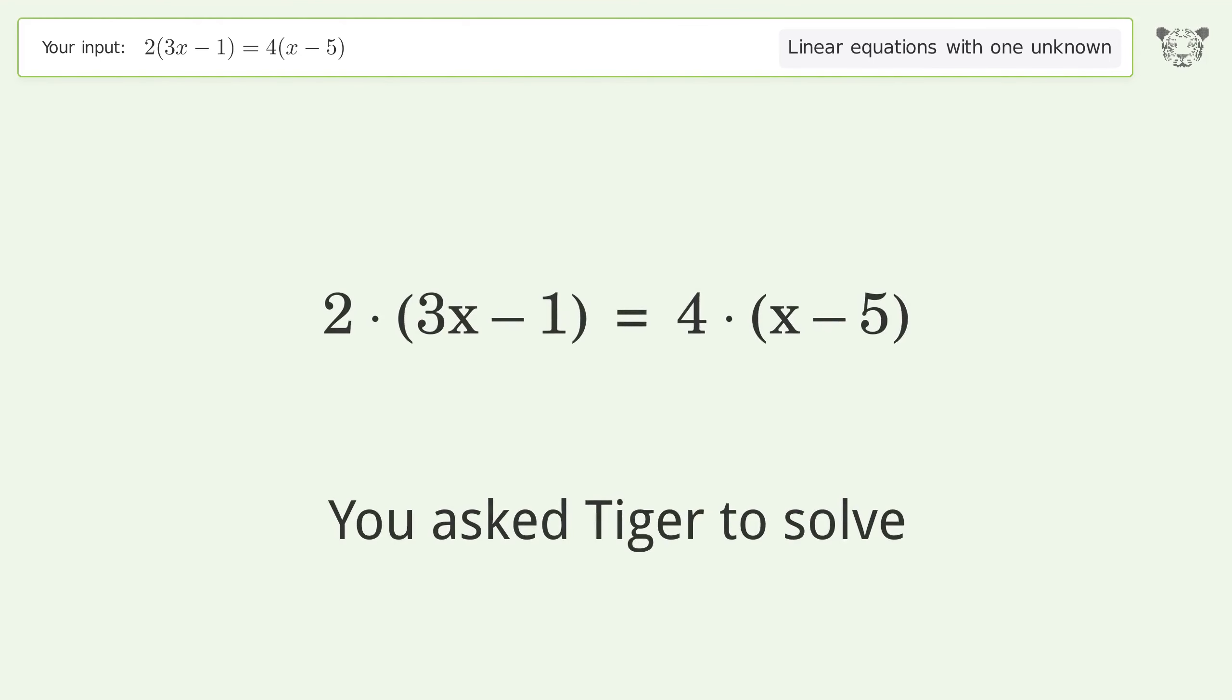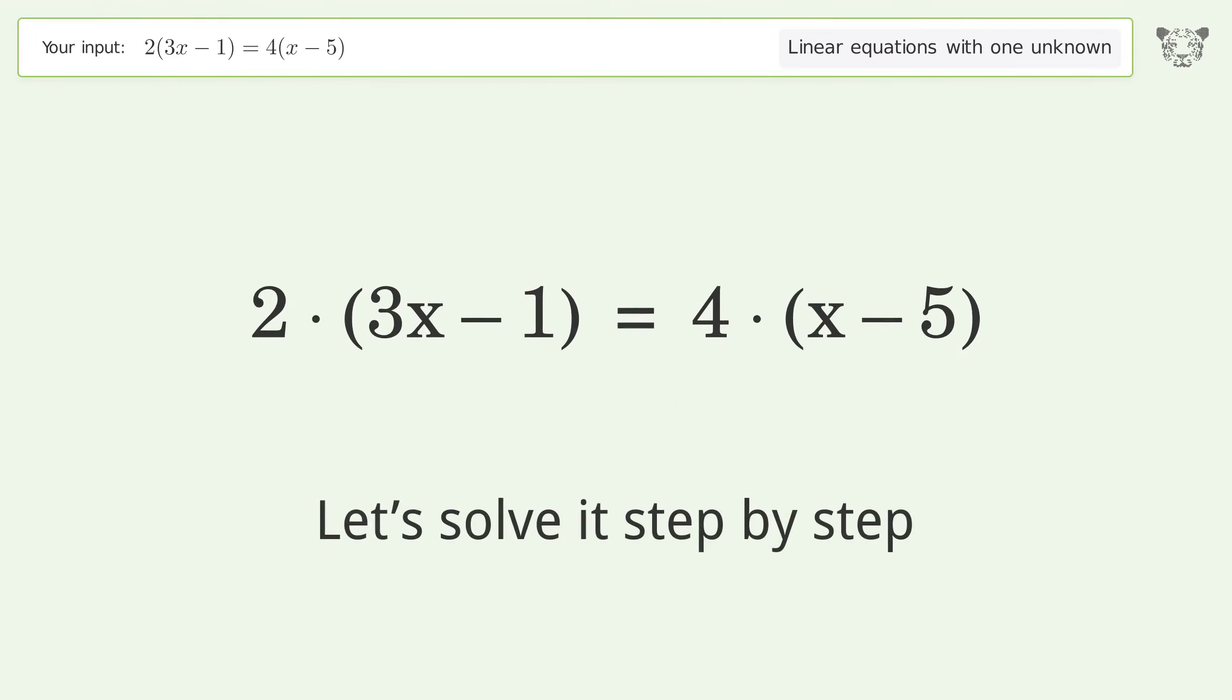You asked Tiger to solve this linear equation with one unknown. The final result is x equals negative 9. Let's solve it step by step.